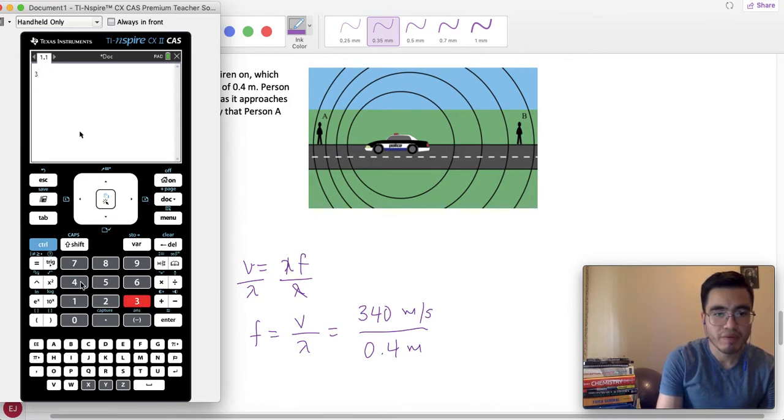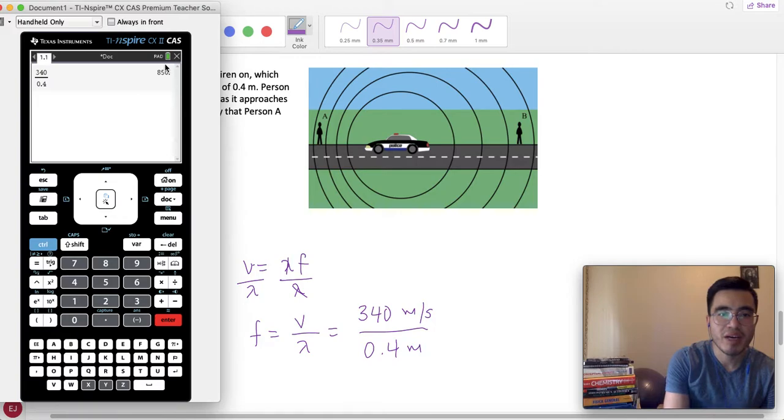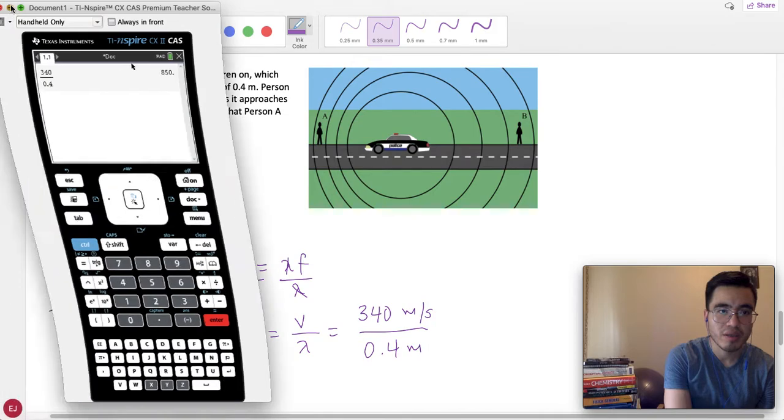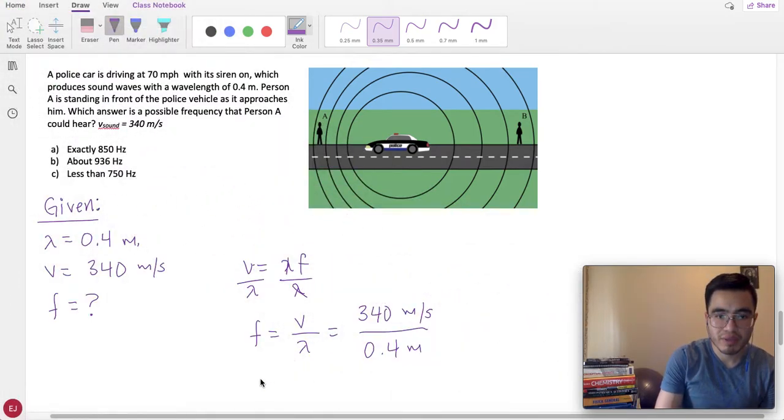Let's do that. 340 divided by 0.4. Press Enter. We have 850. 850 hertz, because we're finding frequency. And that is the unit for frequency, the hertz, oscillations per second. So, we write frequency equals 850 hertz.